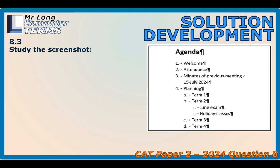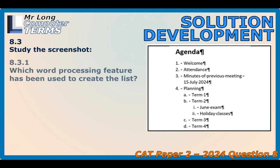Let's move on to this screenshot showing a list for an agenda. The question asks what word processing feature has been used to create this list. You might be tempted to say numbering because you can see one, two, three, four — but there's a different numbering style at the second level with A, B, and the third level uses Roman numerals. So this is a multi-level list.